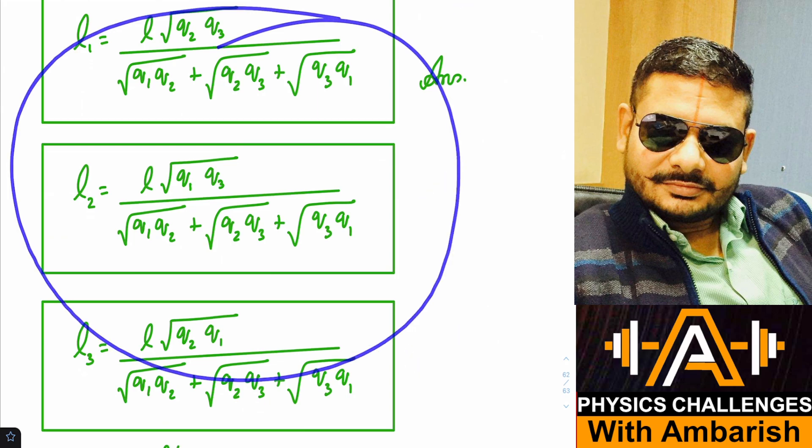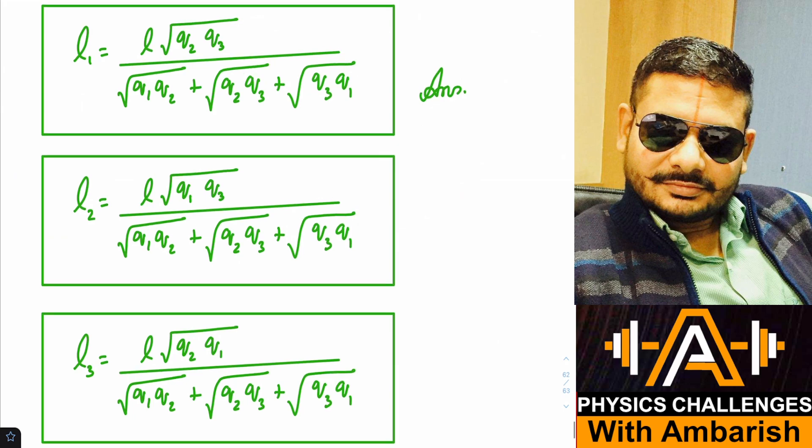So this is what you get as answers L1, L2, and L3. So if you can just look at L1, other two are just cyclic expressions. So L1 is L root Q2 Q3 upon root Q1 Q2 plus root Q2 Q3 plus root Q3 Q1.